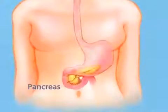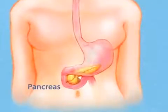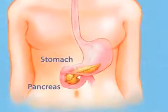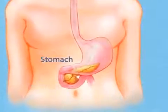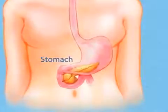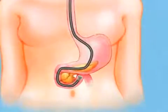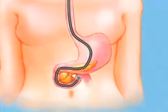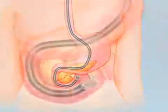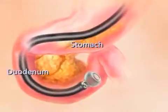Endoscopic ultrasound is a minimally invasive technique that allows doctors to view your pancreas, which lies behind your stomach. Once you've been given sedating medication, an endoscope will travel through your mouth into your stomach and duodenum.